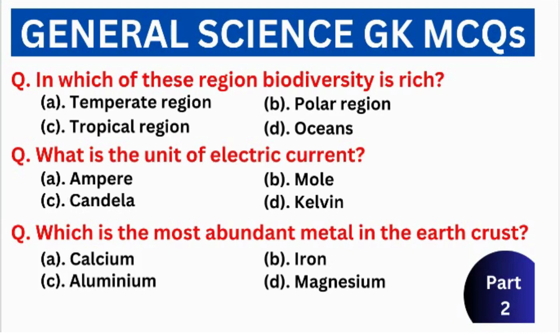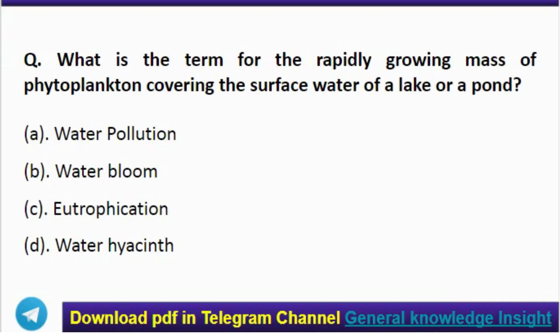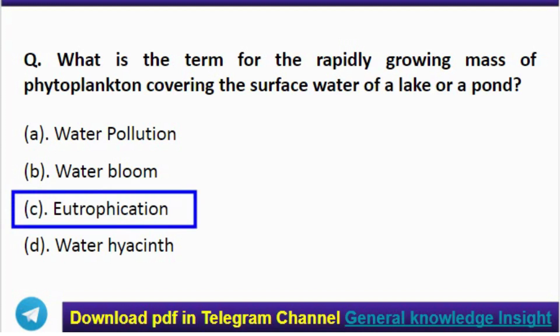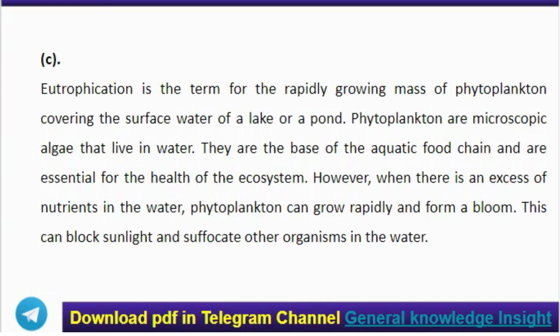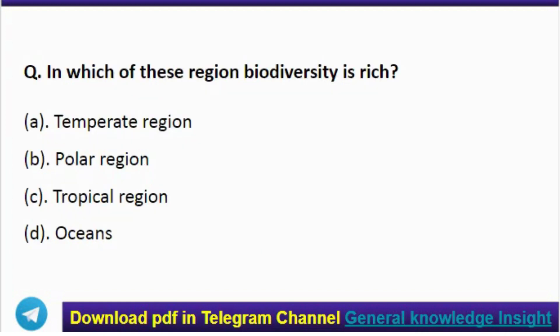First question: what is the term for the rapidly growing mass of phytoplankton covering the surface water of a lake or pond? Correct answer: option C, eutrophication. Eutrophication is the term for the rapidly growing mass of phytoplankton covering the surface water of a lake or pond. Phytoplankton are microscopic algae that live in water; they are the base of the aquatic food chain and are essential for a healthy ecosystem. However, when there is an excess of nutrients in the water, phytoplankton can grow rapidly and form a bloom, which can block sunlight and suffocate other organisms in the water.